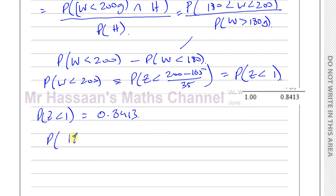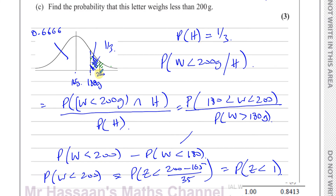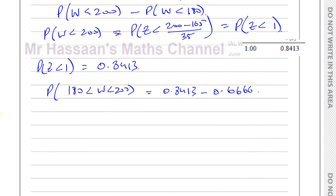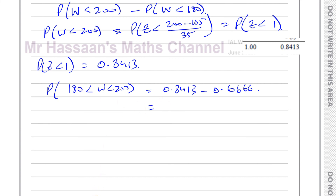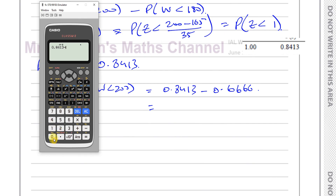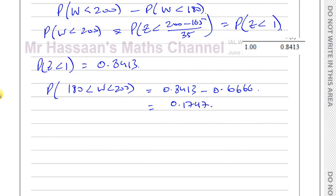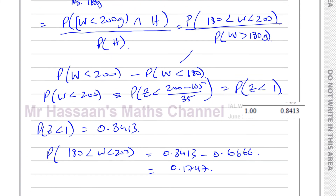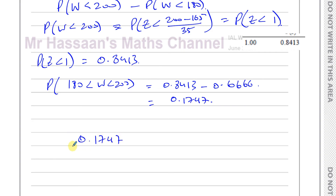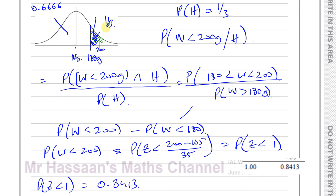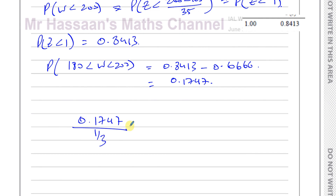Therefore P(180 < W < 200) = 0.8413 − 0.6666 = 0.1747. Dividing by P(heavy) = 1/3 gives 0.1747 ÷ (1/3) = 0.1747 × 3.